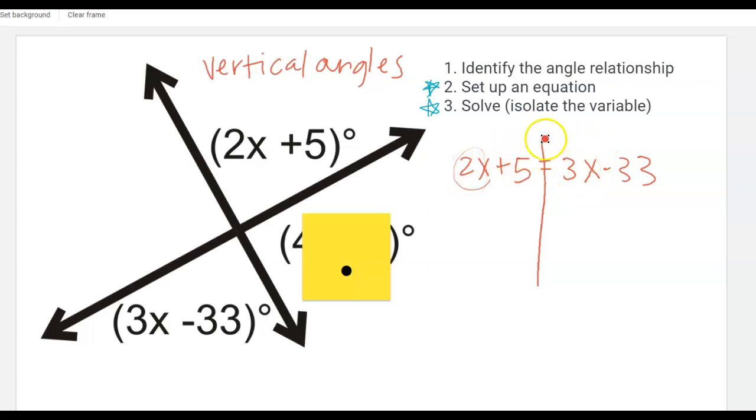I know that I'm going to end up combining my like terms but when I want to take 3x and maybe put it with the 2x over here I'm crossing this threshold of the middle of the equation, the equal sign, and so when I cross over I need to do the opposite inverse operations to get my like terms combined together.